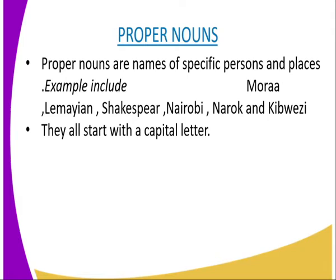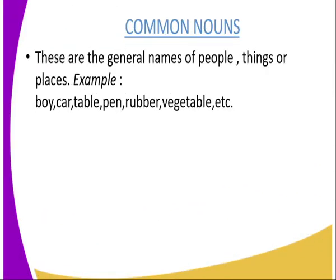We're going to look at proper nouns first. Proper nouns are names of specific persons and places. Examples include names such as Mora, Lemayan, Shakespeare, Nairobi, Narok, and Kibwezi. Lemayan is the name of a person, Shakespeare is the name of a person, Nairobi is the name of a city, Narok is a name of a place, and Kibwezi is also a name of a place. What we notice about all these names is that they all start with a capital letter.